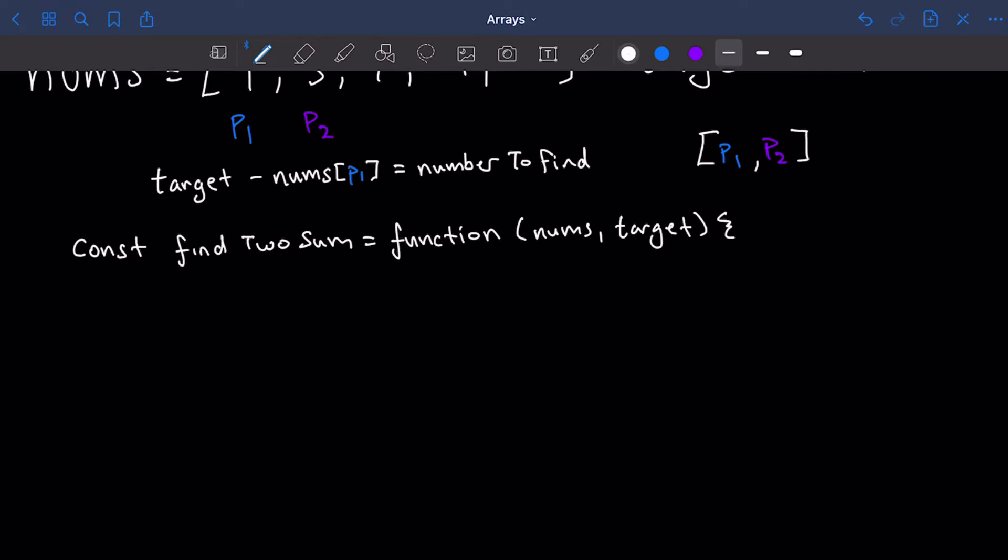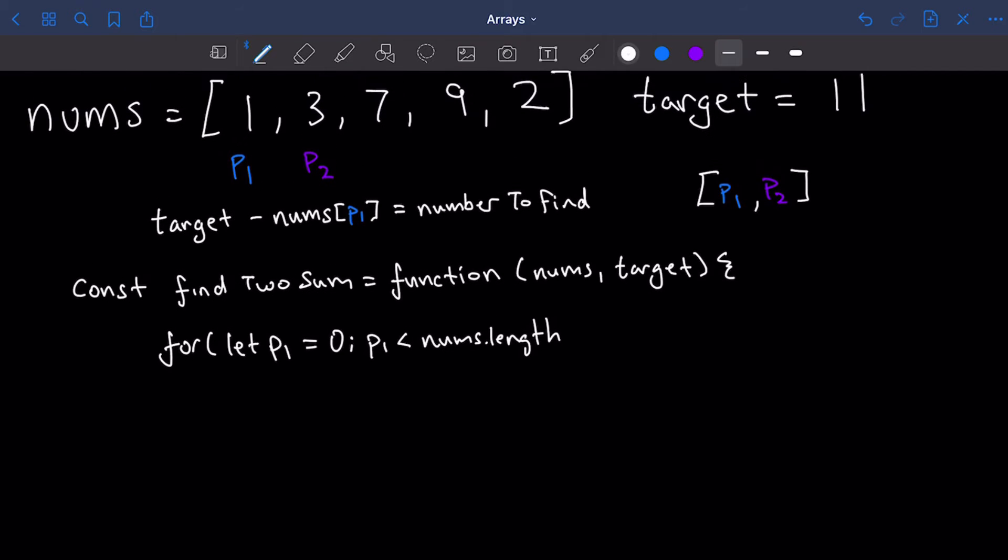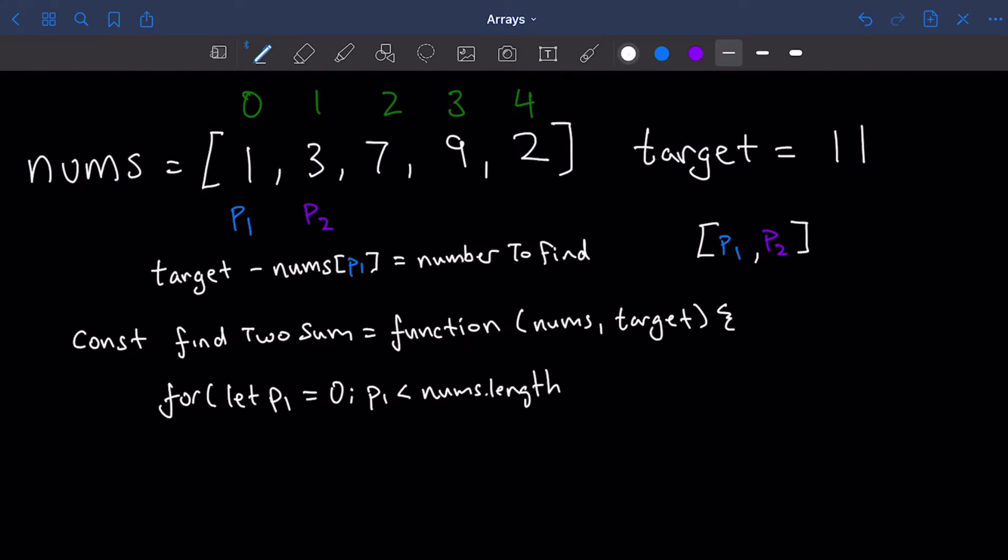And here we are going to use our for loop and inside of it instantiate p1 which equals zero, zero being the first index, as long as p1 is less than nums.length. And here .length is going to give us five. So as long as p1 is less than five, which it will be because the last number or the last index in this array is four, and four is always going to be less than five.